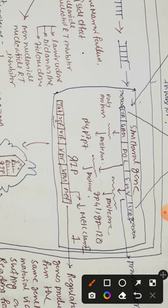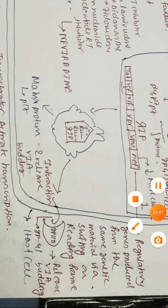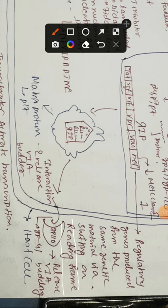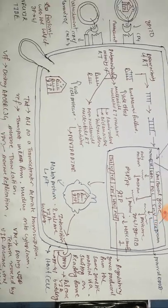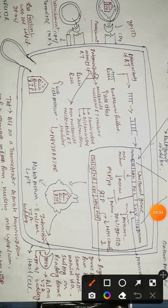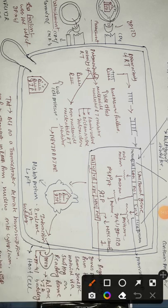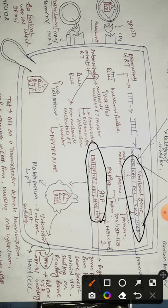HIV virus is capable of undergoing shifting of the reading frame. The utility of this reading frame shifting is that, along with the structural genes, by just shifting the reading frame they can also lead to the formation of six extra regulatory genes.